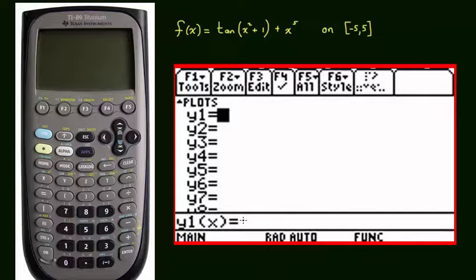Follow along as I type it in. We want to get to the tangent button. The tangent button is second and then the T will bring up tangent. Then we want parentheses. Here's a parentheses.